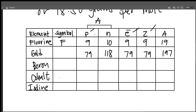Iodine — you must fill in these blanks. I'll write some information for you. For cobalt we have 42 neutrons and 27 for atomic number. For iodine we have 53 for atomic number and 127 for mass number. You can find this on the periodic table.